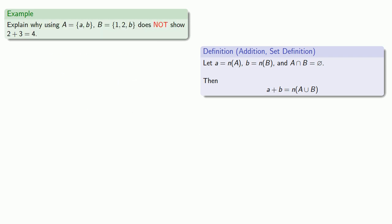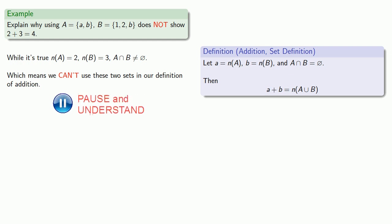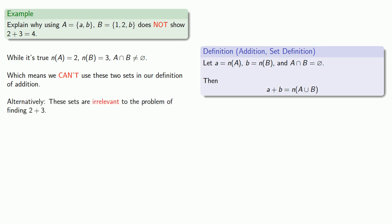It's also worth seeing why the other sets didn't work. We could have used a set A with cardinality two and set B with cardinality three, but those two sets don't work. While it is true they have the correct cardinalities, their intersection is not the empty set — and that means we can't use those two sets in our definition of addition. Another way to look at it: those sets are simply irrelevant to the problem of finding two plus three.